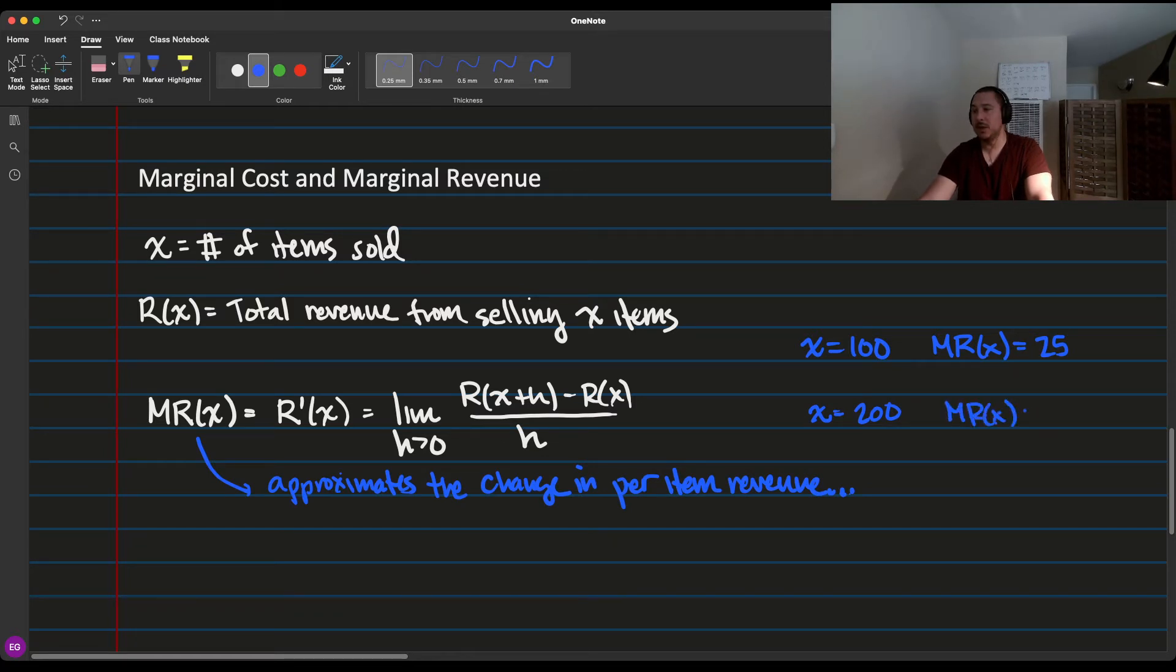Yeah, exactly. The marginal revenue usually goes down at some point. This is what happens with mass production, right? When you're selling a bunch of something, that usually drives the price down because there's a lot of it on the market. So we use this concept of marginal revenue to figure out the per item cost and how that is changing.